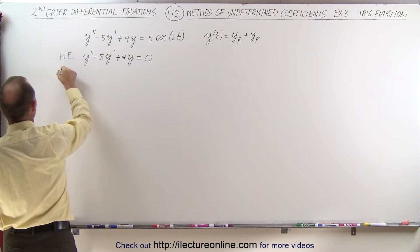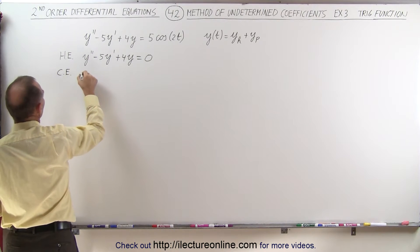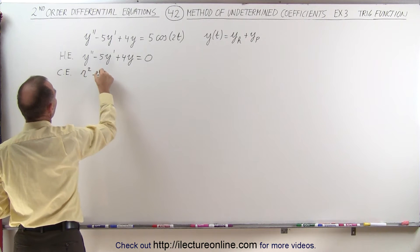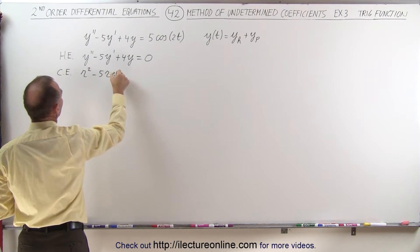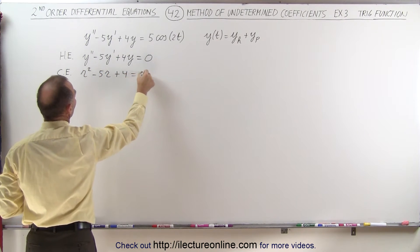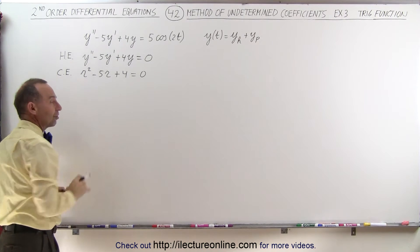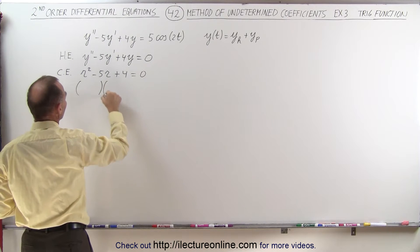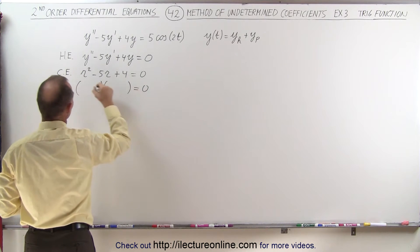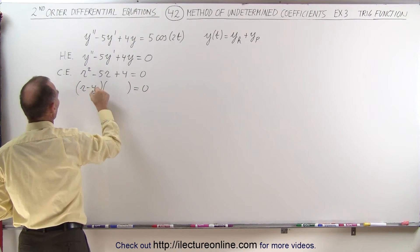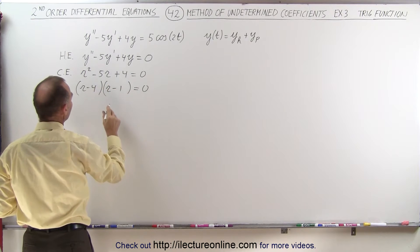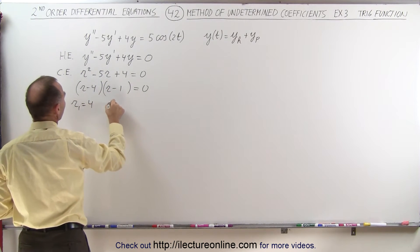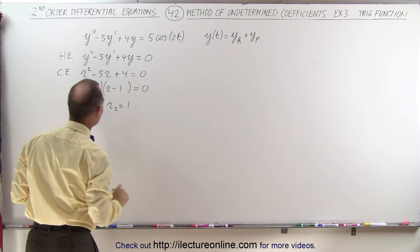We can do that by using the characteristic equation, which is r squared minus 5r plus 4 equals 0. This can be easily solved like any quadratic equation — we can factor this as r minus 4 times r minus 1. So the two roots are r1 equals 4 and r2 equals 1.